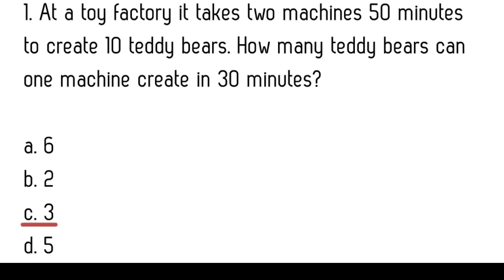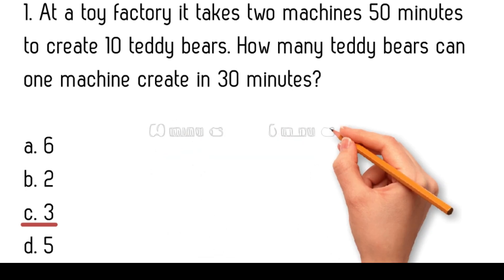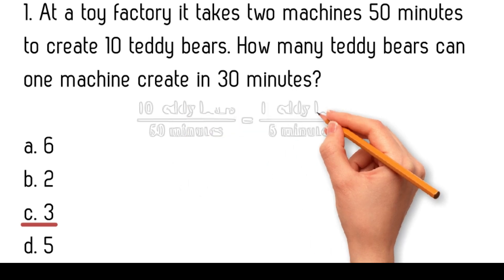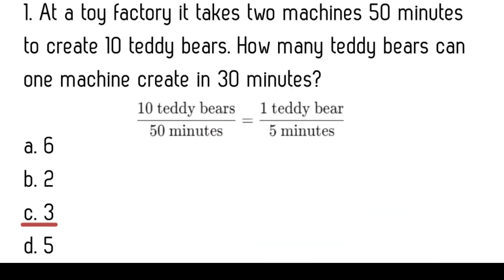First, let's determine the combined rate of the two machines. The problem states that two machines can create 10 teddy bears in 50 minutes. Therefore, the combined rate of the two machines is: rate of two machines equals 10 teddy bears divided by 50 minutes, which equals 1 teddy bear per 5 minutes.